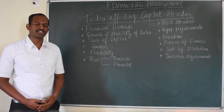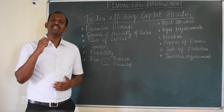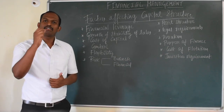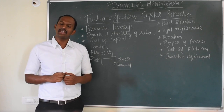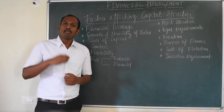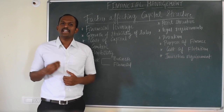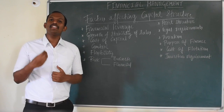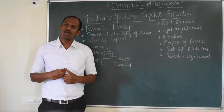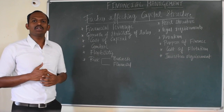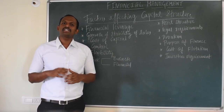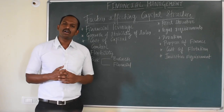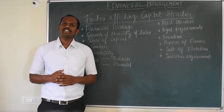What factors affect capital structure? The first factor is financial leverage — the usage of fixed-cost security funds like preference shares or debentures in the capital structure. If a company uses more debt, it indicates more financial leverage. The objective is to maximize the benefit towards equity shareholders. The second factor is growth and stability of sales — the minimum amount of sales the company needs to generate to meet its payments towards creditors as well as interest payments.